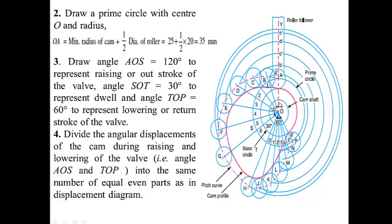From point O we draw a vertical axis, and this axis cuts the prime circle at point A. We mark an angle of 120 degrees with base OA, so angle AOS equals 120 degrees. We divide this angle into 6 equal parts, so each part indicates an angle of 20 degrees. From line OS we draw an angle SOT equal to 30 degrees, corresponding to the dwell period. From line OT we draw another angle TOP equal to 60 degrees, corresponding to the return stroke, and divide this into 6 equal parts of 10 degrees each.